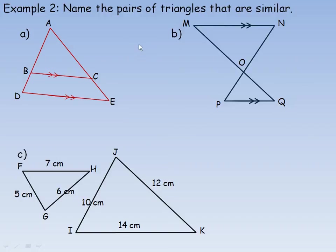In the example on the last page, it says name the pairs of triangles that are similar. In the first diagram, we're told that BC is parallel to DE. Since BC is parallel to DE, that means the corresponding angles are equal. So angle ABC, this angle right here, should be equal to angle ADE, this angle right here.